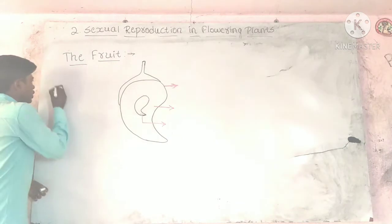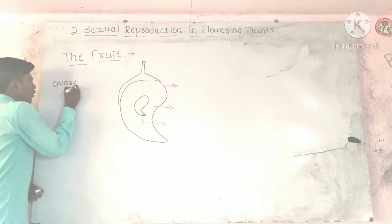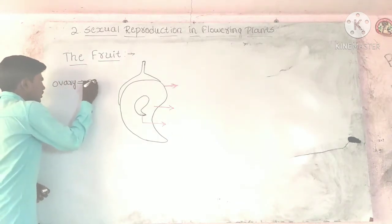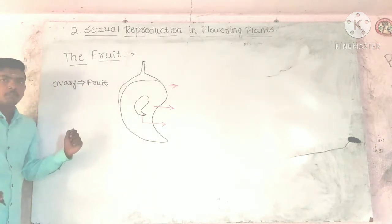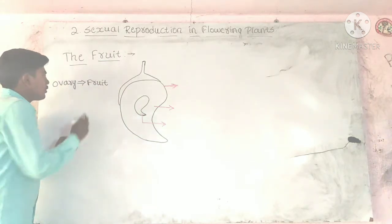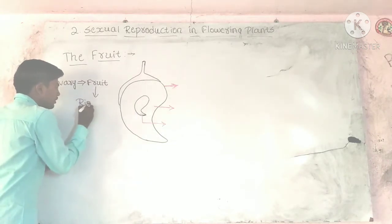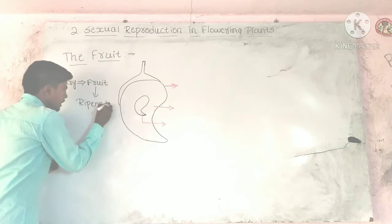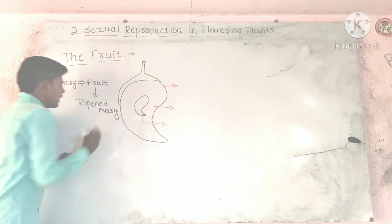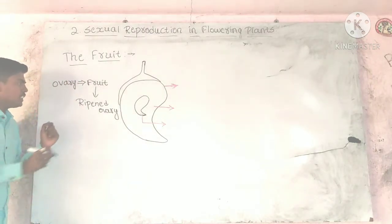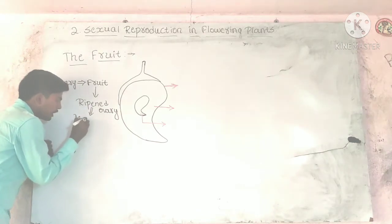After fertilization, the ovary develops into fruit. Fruit is the ripe ovary. Ripe means mature. Fruit is the mature ovary.